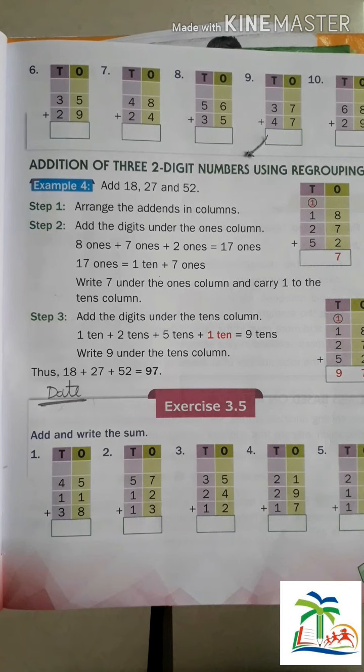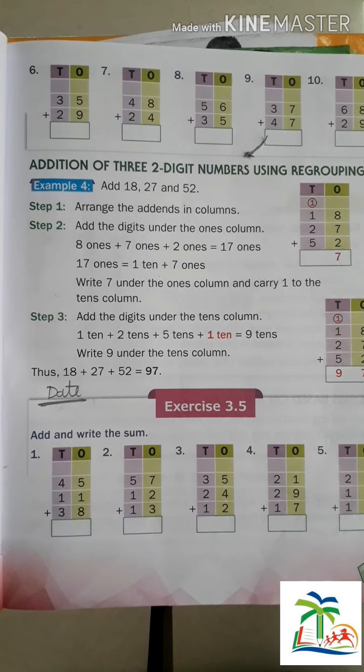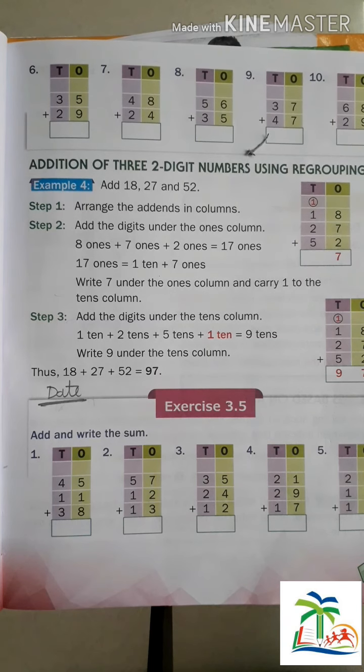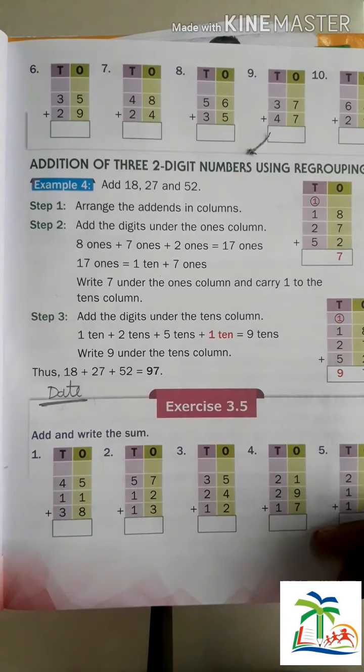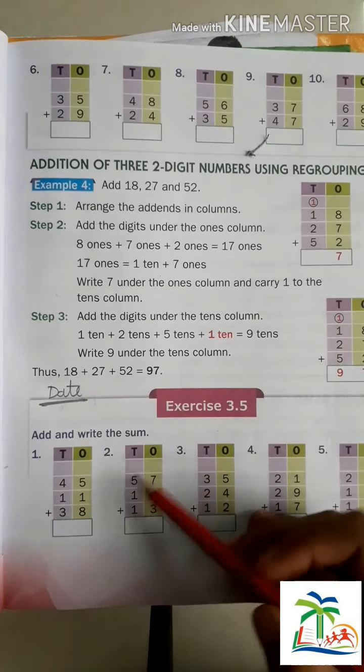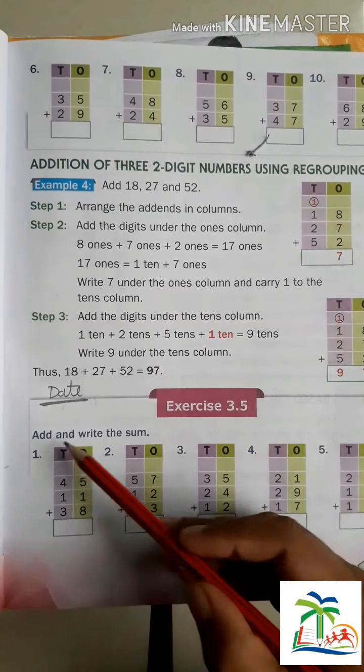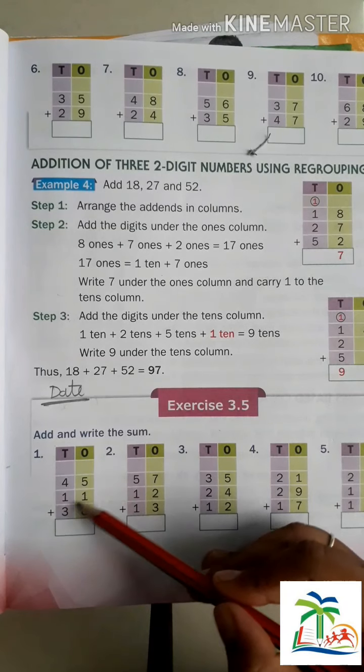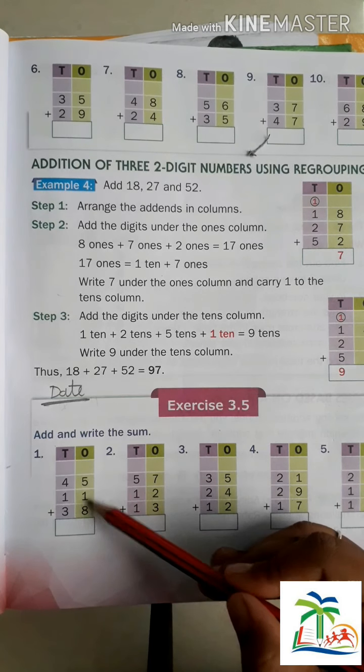I hope good morning students. I hope you completed your work till Exercise 3.4. Now we start Exercise 3.5. It is again addition. Add and write the sum. Question number first: 45, 11, and 38. We create three numbers.